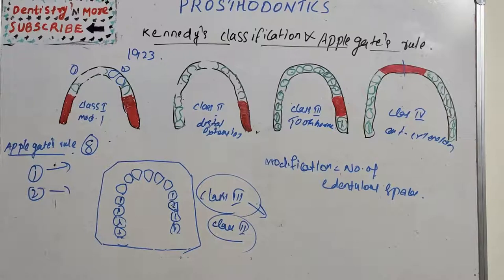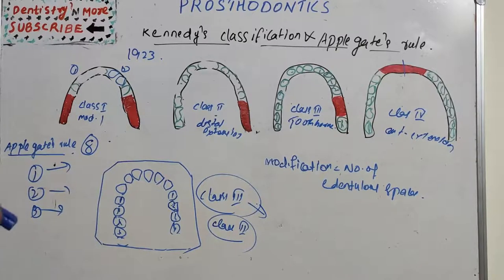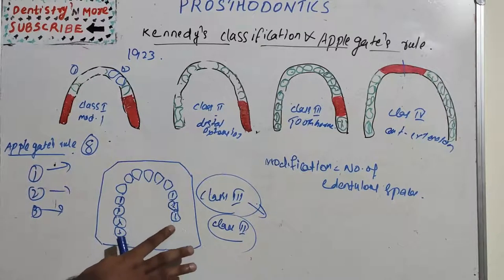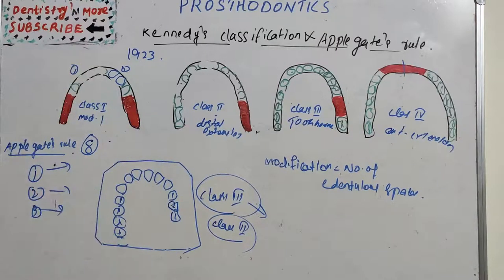Rule number 4: if the second molar is missing and is not to be replaced, it is not considered in the classification.